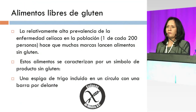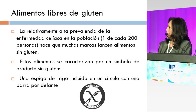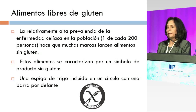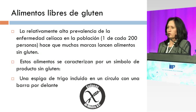¿Cuáles son los alimentos libres de gluten? Van a ser todos aquellos que van a estar marcados por la industria de alimentos con una espiga incluida en un círculo que tiene una barra por delante. Estos alimentos estrictamente los maneja la industria alimentaria en relación a que los que necesitan este tipo de dieta son muchos.